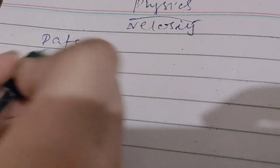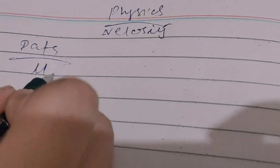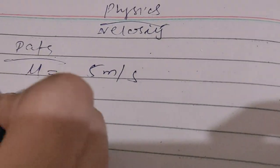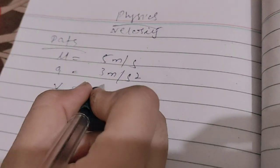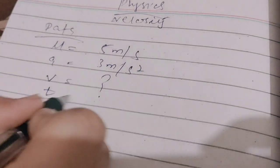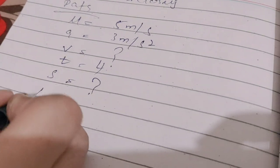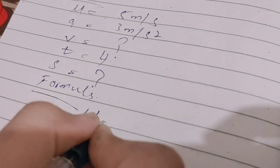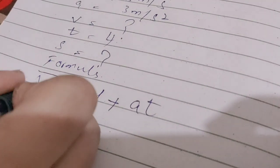The given data is: initial velocity u = 5 m/s, acceleration = 3 m/s², and time = 4 seconds. We need to find the final velocity. The formula is: v = u + at, that is, first velocity plus acceleration multiplied by time.